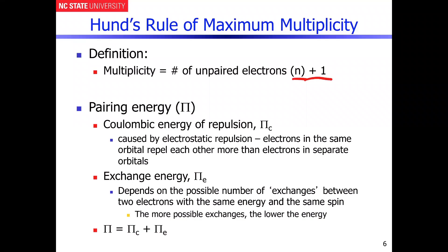There are going to be two contributions to what dictates the stability of certain electron configurations over others, and the two considerations are combined together in the same concept, which is known as the pairing energy, or capital Pi. The idea is that there are two contributions to pairing energy, and that's for pairing electrons together in the same orbital.